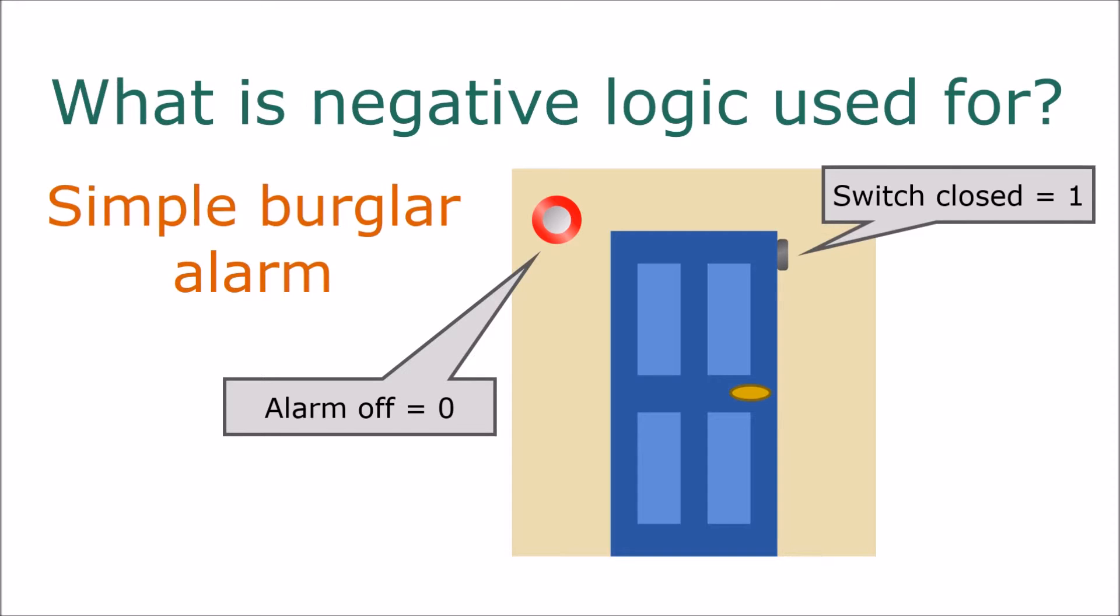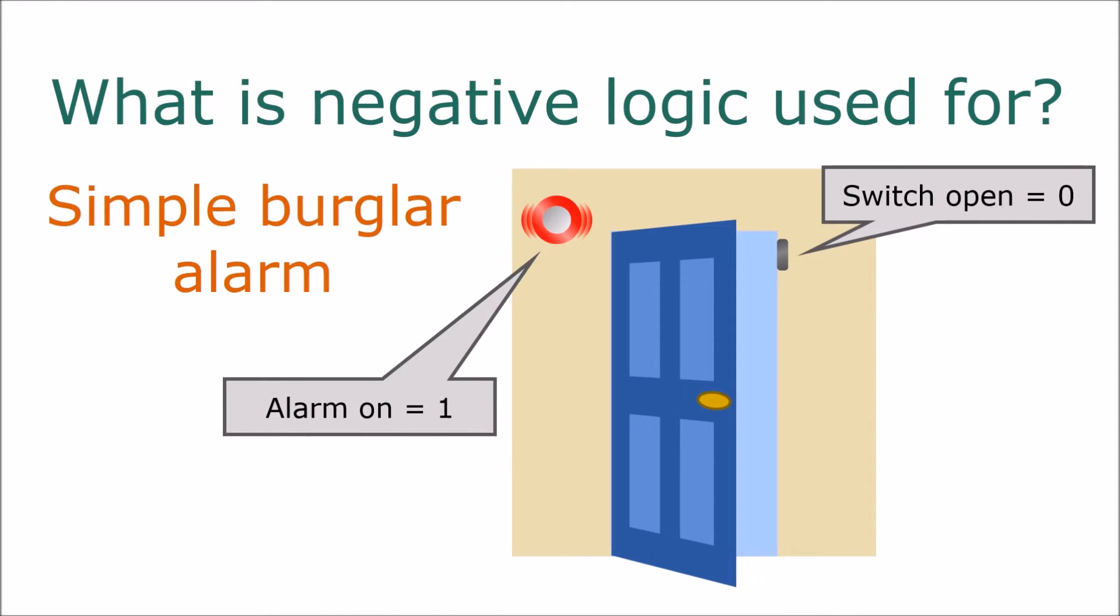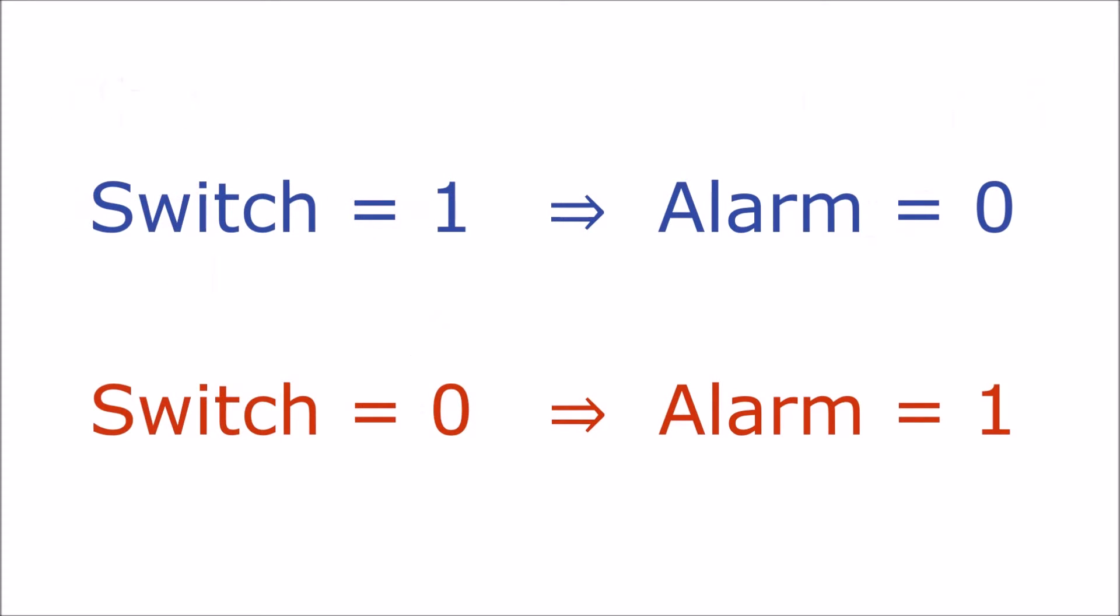Now what happens when the door opens? The switch contacts open so the door switch turns off, giving it a value zero. At this point we would want the alarm to turn on. So when the input, the door switch has a value one, we want the output, the alarm, to be zero. And when the input is zero we want the output to be one. This is exactly what a NOT gate does.